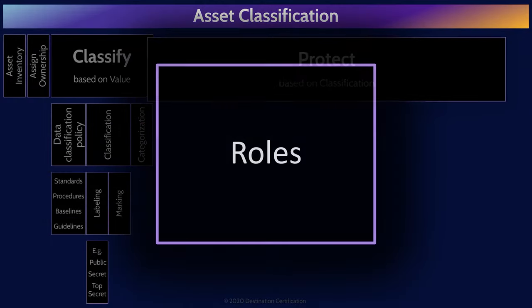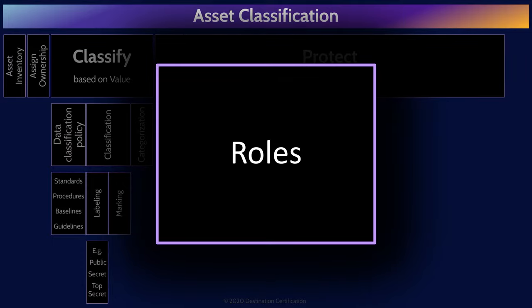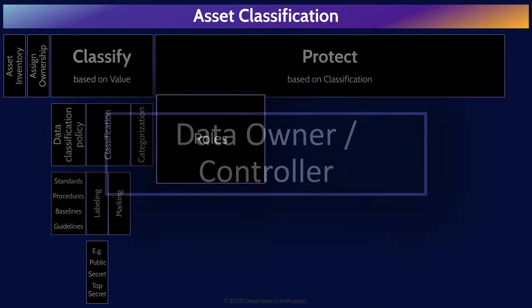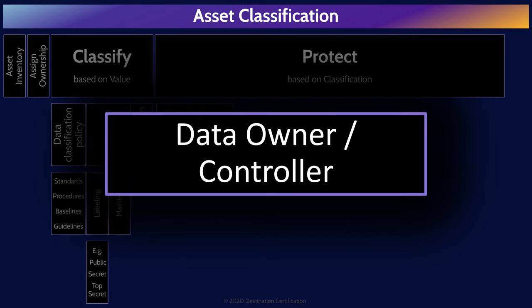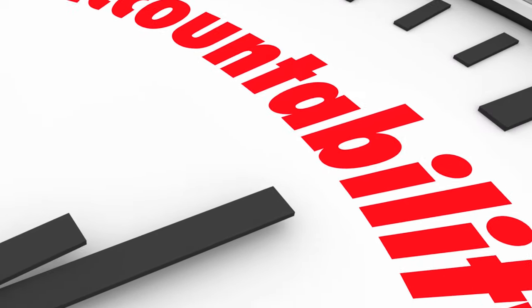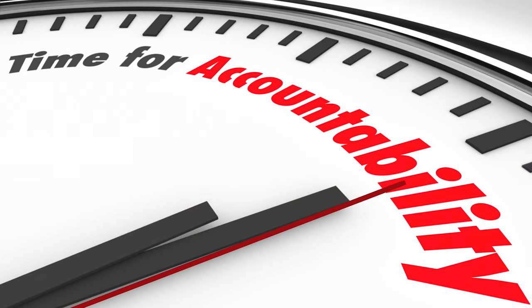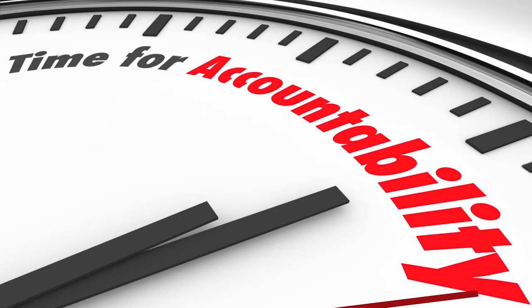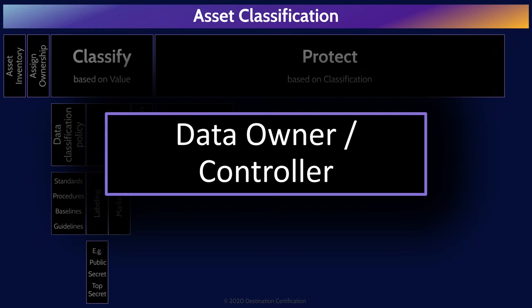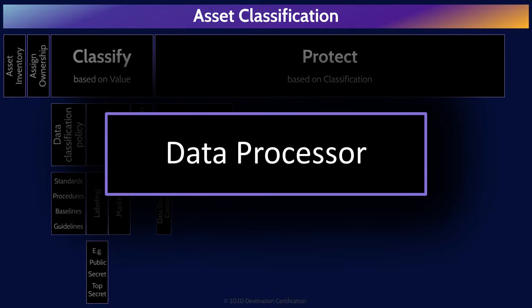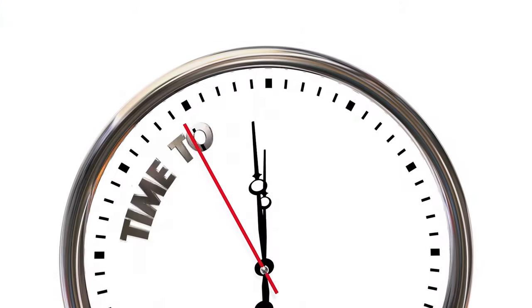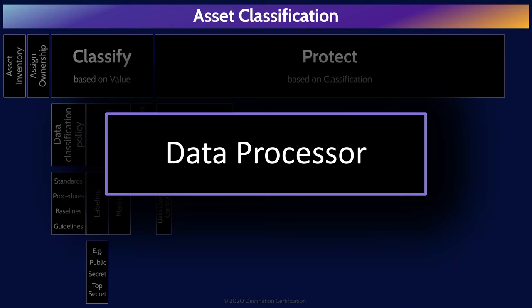We can begin protecting assets by having clearly defined roles of who is accountable and responsible for what. The data owner, also known as the data controller, is the most important role as the owner is accountable for the protection of the data. The owner will define the classification for data and is accountable for ensuring the data is protected accordingly. Data processors are responsible for processing data on behalf of the owners — a typical example being a cloud service provider storing and processing data on behalf of the owner.